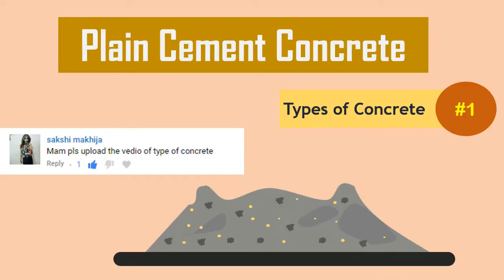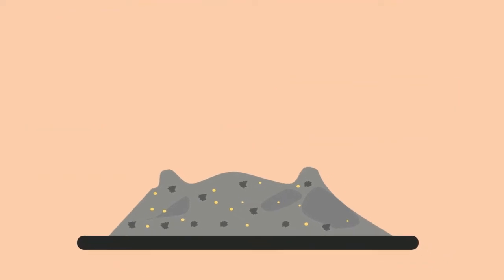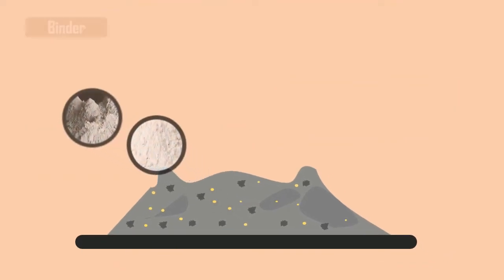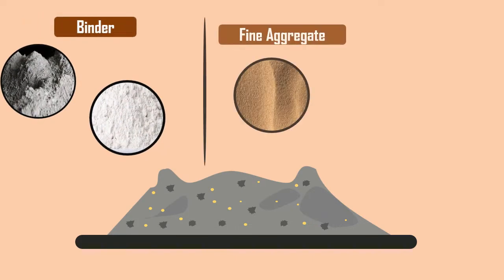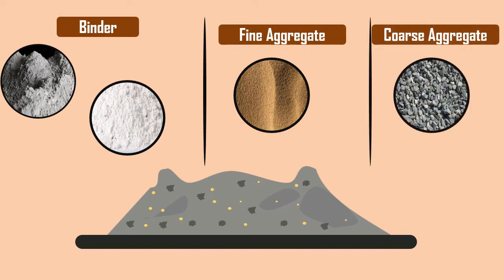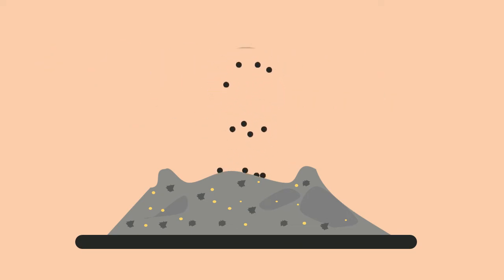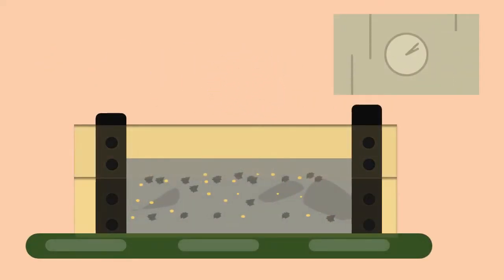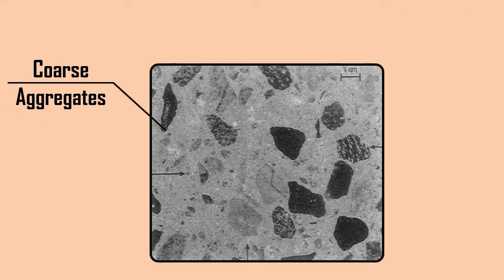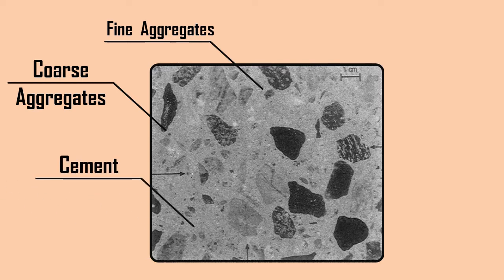Plain Cement Concrete. Concrete is a composite material composed of a binder (i.e. cement or lime), fine aggregates (i.e. sand), and coarse aggregates mixed with water, which hardens with time. The fine aggregates fill the voids of coarse aggregates, and the voids of the fine aggregates are filled with the binder. This binder reacts with water and binds the aggregate, forming a complex matrix. This composite form is called concrete.